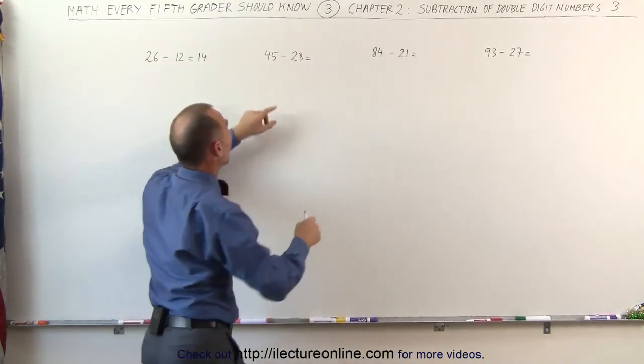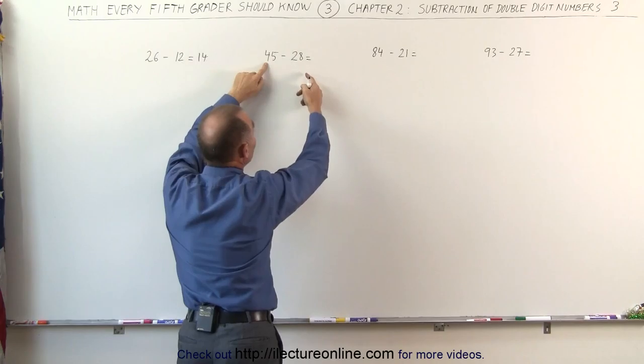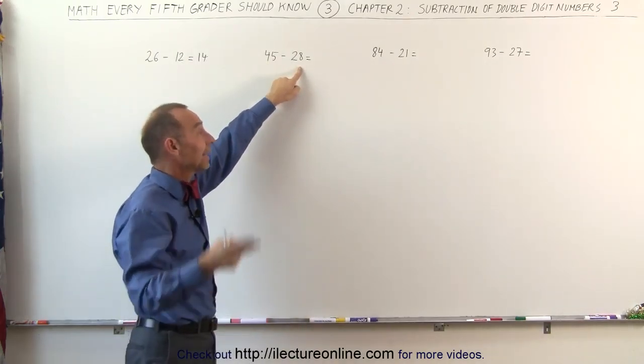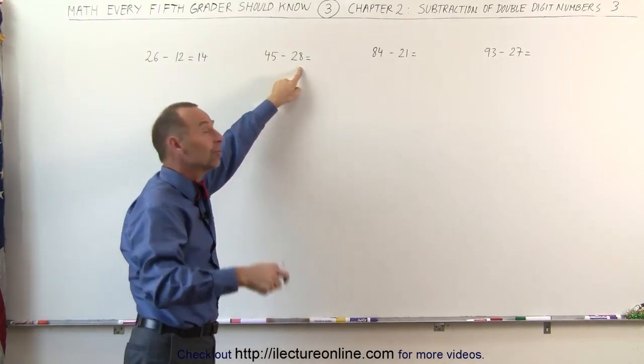So 45 minus 30, 4 minus 3 is 1. That gives me 15. But I subtracted 2 more than I should. I add that back up. 15 plus 2 is 17. My answer is 17.